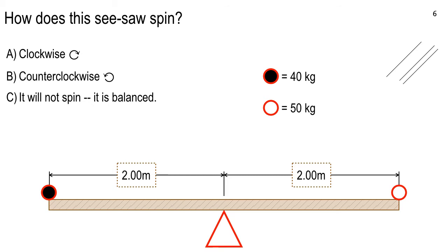Clockwise — and why? Because there's more mass on this side, so that's the side that's going to go down. The other side goes up, and that's clockwise.